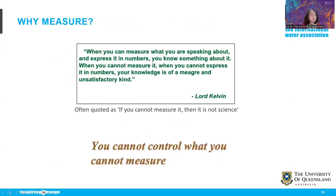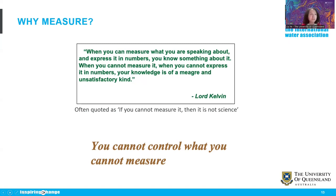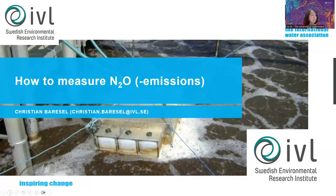Once you identify correlations, they provide the opportunity to reduce emissions. With individual facilities collecting more data, we can generate mitigation guidelines to help the whole sector reduce emissions. I teach process control at UQ, and the first step for process optimization is measurement — without measuring, you basically cannot control. As Lord Kelvin noted, if you can't measure it, it's not science. I hope you enjoy the rest of the presentations about how to measure N2O.